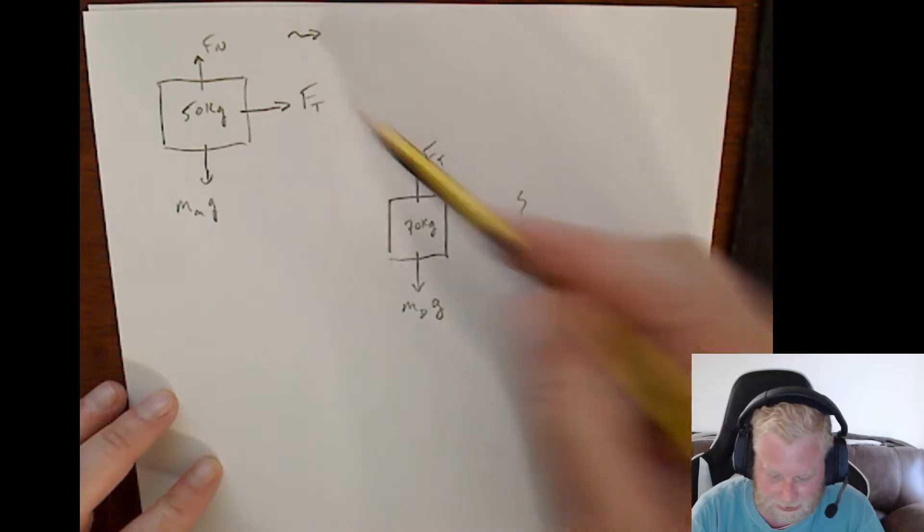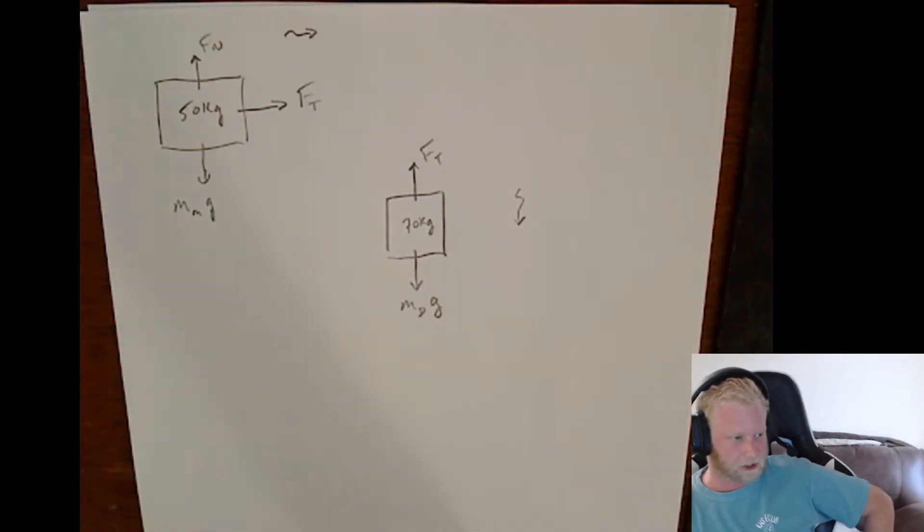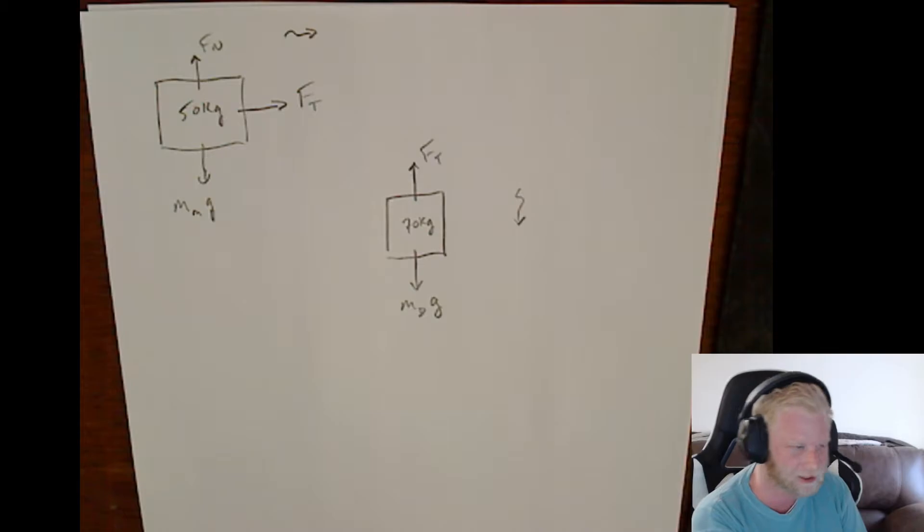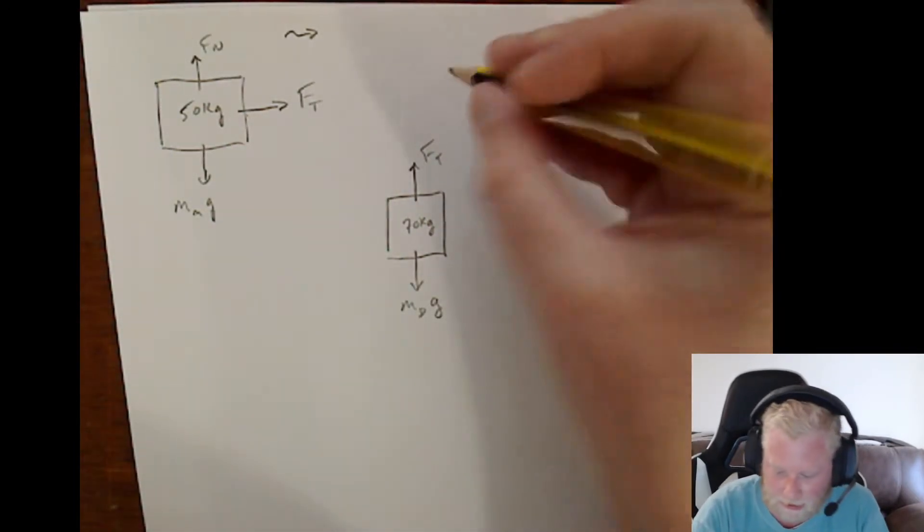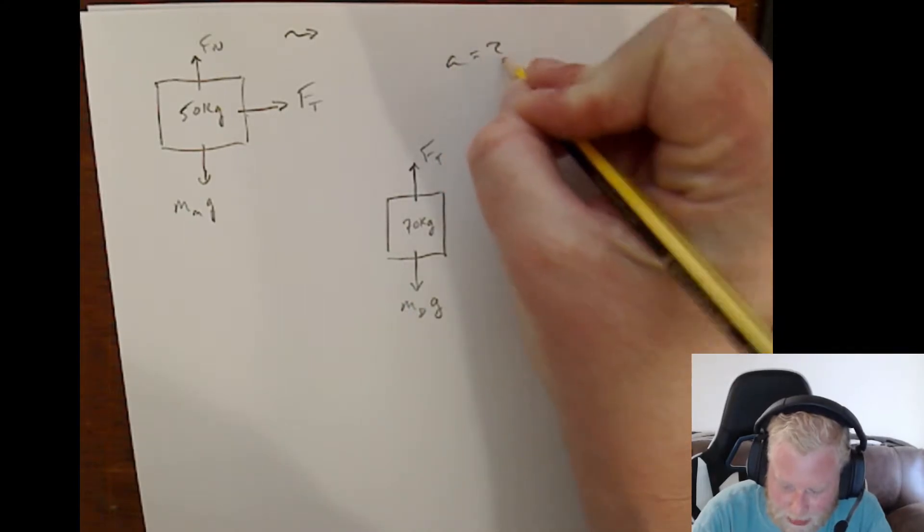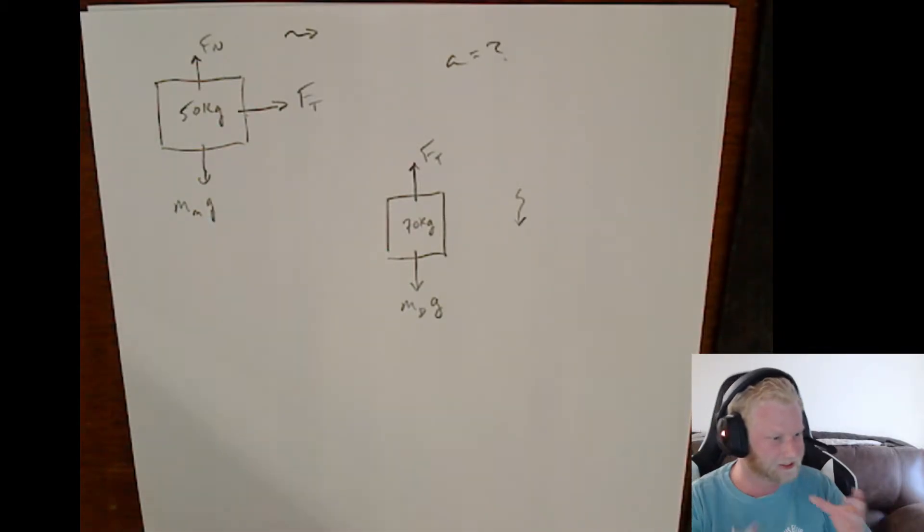Now, notice I didn't subscript our tension forces here. The reason I didn't subscript them is because they share the same tension force. If you have that rope of negligible mass connecting these two objects and it's taut, then that tension force is the same acting on Don and on Mary. The other thing that's going to be the same is that acceleration, because the rope is taut. They're acting as two objects in a single system.